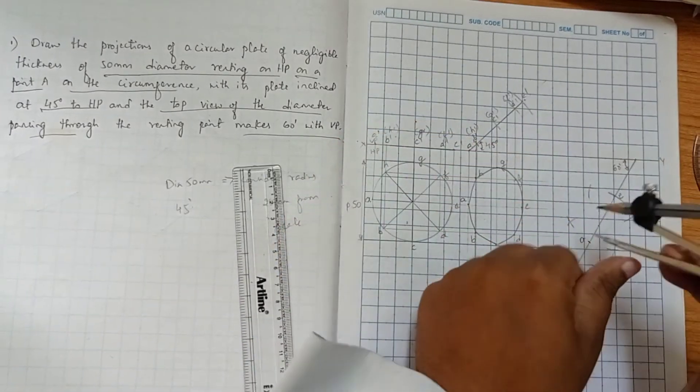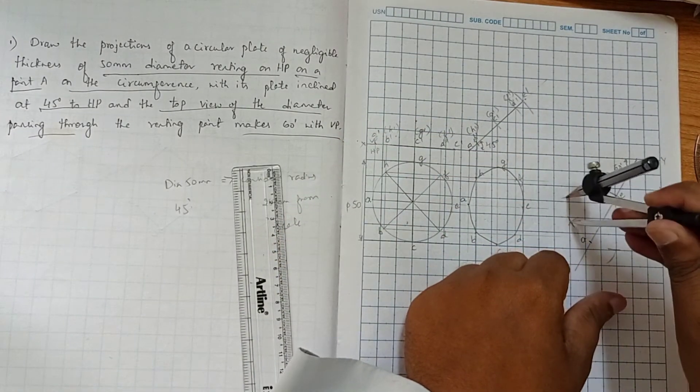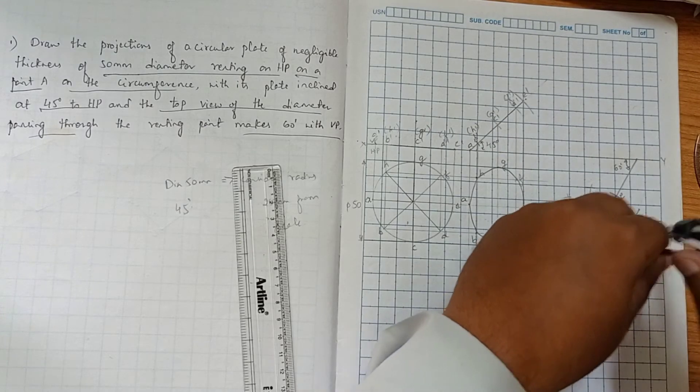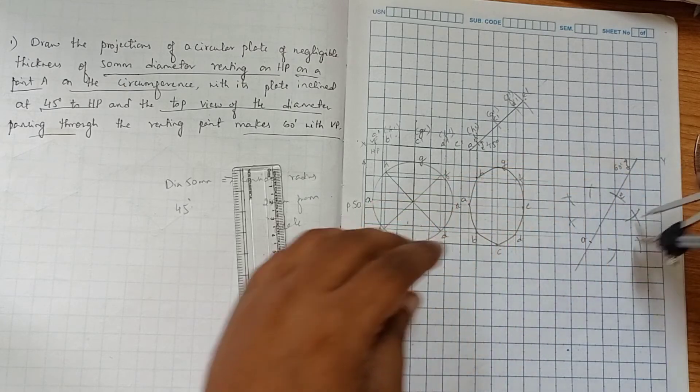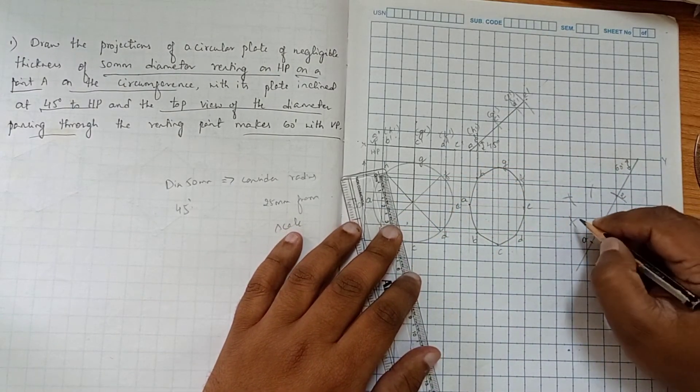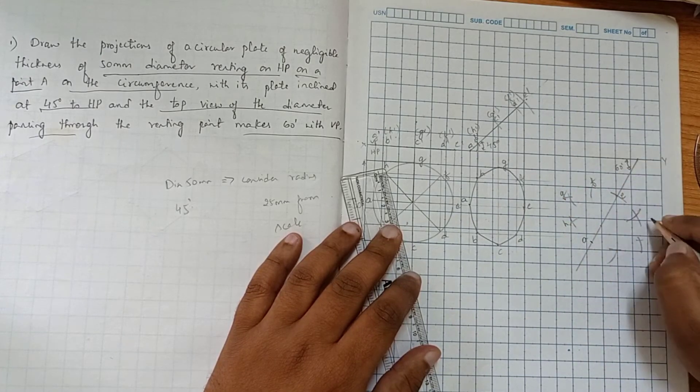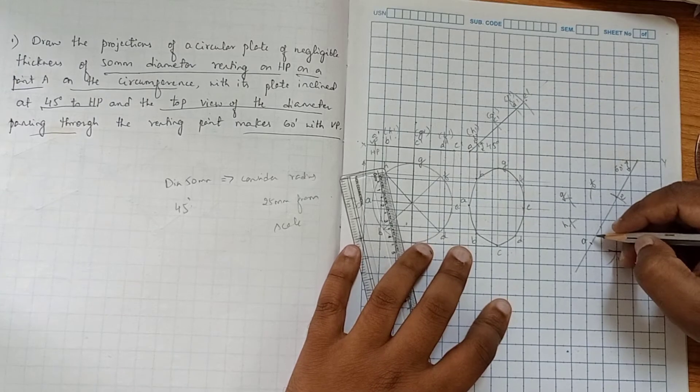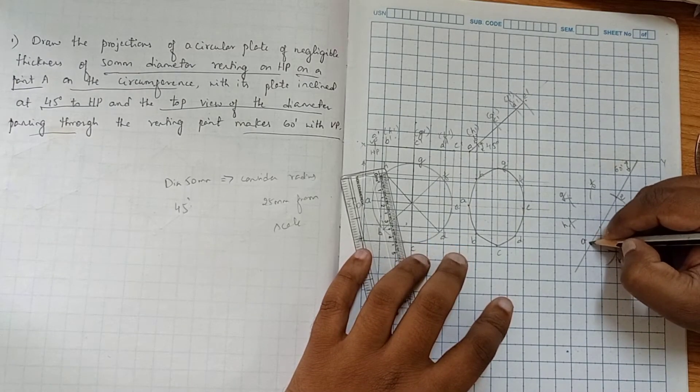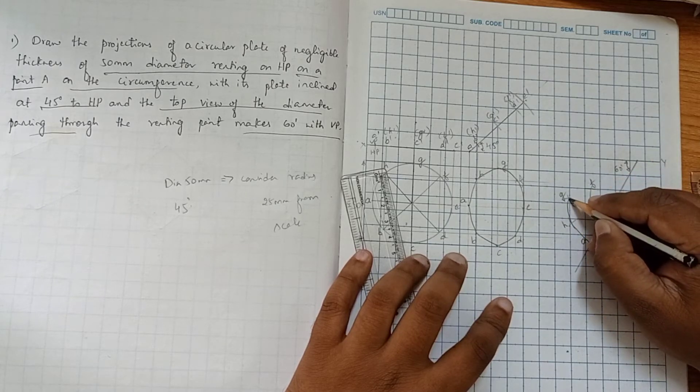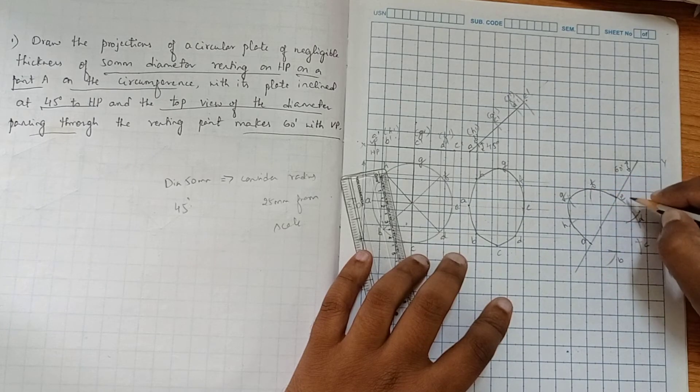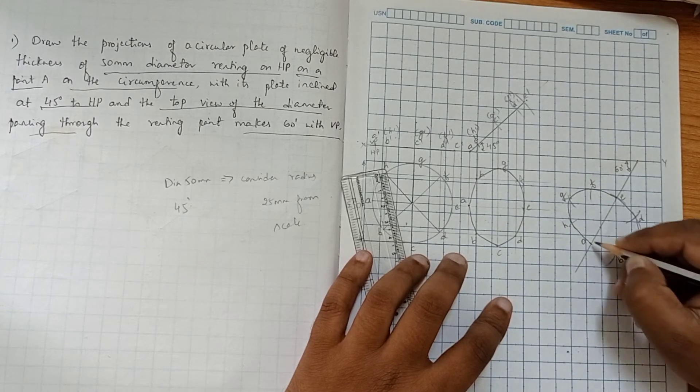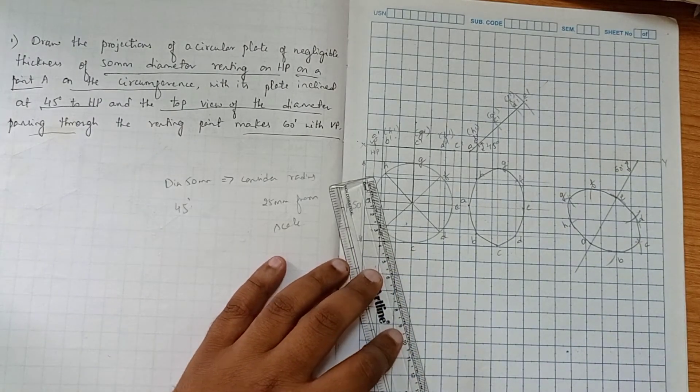After this we have left to cut HG and FG. This is F, now this is H, this is G, this is F, this is D, this is E, this is B. Similarly we have to construct an ellipse here. This is how we construct the third position top view.